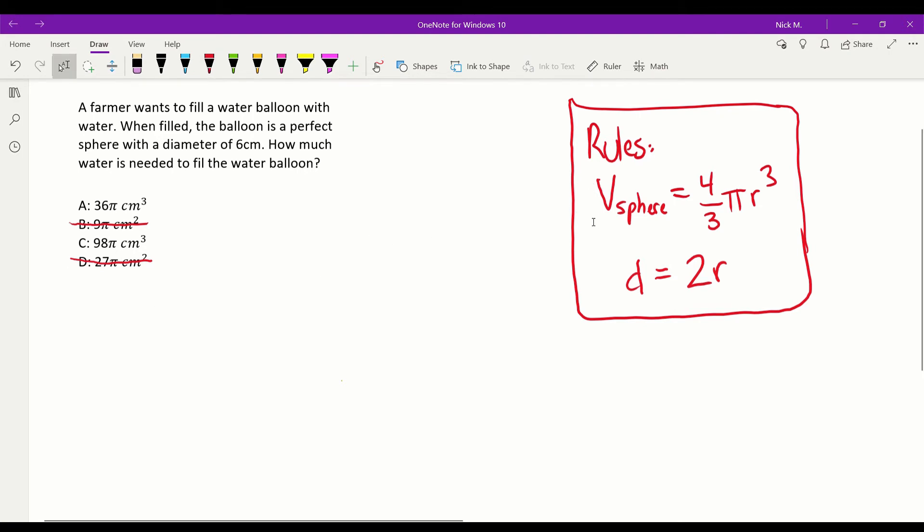So the first rule we need to know is the volume of a sphere, because it tells us here that the water balloon makes a perfect sphere. So that is the volume of a sphere equals four-thirds pi r cubed. And then the second rule that we need to know is simply the diameter equals two times the radius.